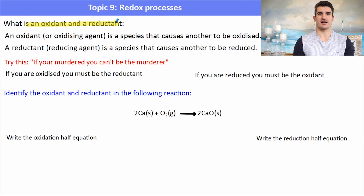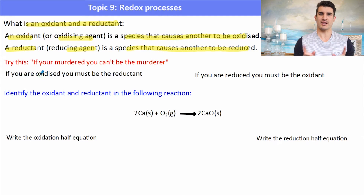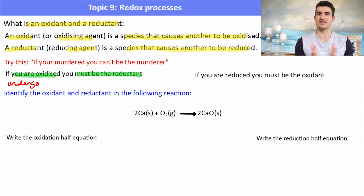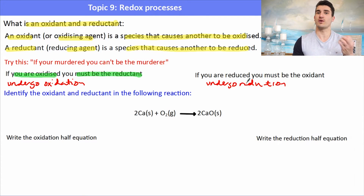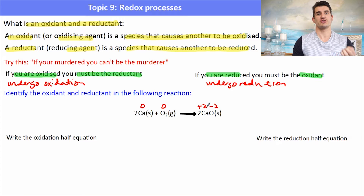An oxidant (oxidizing agent) is a species that causes another to be oxidized; a reductant (reducing agent) causes another to be reduced. A useful analogy: if you're murdered, you can't be the murderer. So if a species undergoes oxidation, it is the reductant — not the oxidant. If a species undergoes reduction, it must be the oxidant.